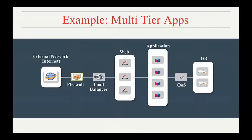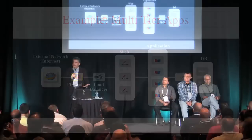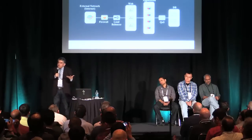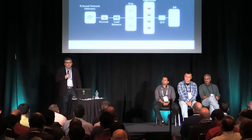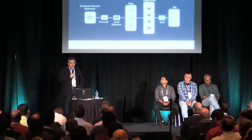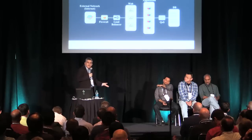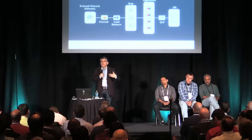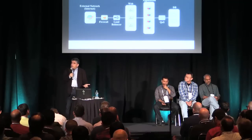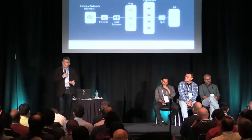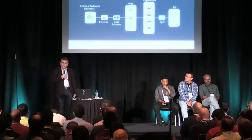To make this more concrete, consider a simple three-tier application with a VIP tier, an application tier, and a database tier, with an external network connection. For example, you might want a firewall and load balancer between the external network and the web tier, or a quality-of-service requirement between the app tier and the database tier.